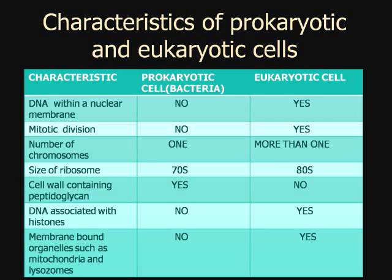Size of ribosomes: prokaryotic cells have 70S ribosomes and eukaryotic cells have 80S. We get 70S because it's 30S plus 50S — microbiologically speaking, these fuse and the remaining part is trimmed down to 70S. For eukaryotic cells, it's 60S plus 40S, which would be 100S, but 20S is trimmed off, giving 80S.